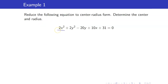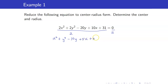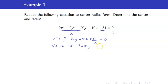The first thing we do is divide everything by the coefficient of X squared and Y squared, which is 2. We get X squared plus Y squared minus 10Y plus 5X plus 31 over 2 equals 0. To complete the square, let us group all terms involving X together and all terms involving Y together, putting all constants on the other side — so we have negative 31 over 2 on the right.